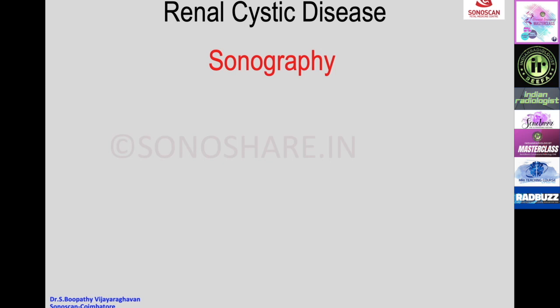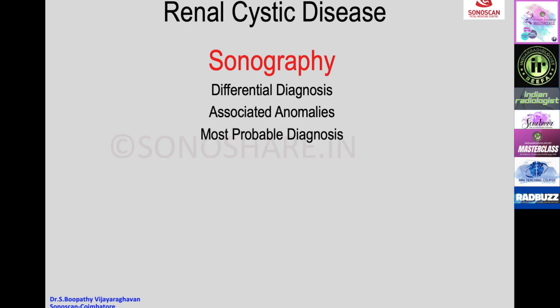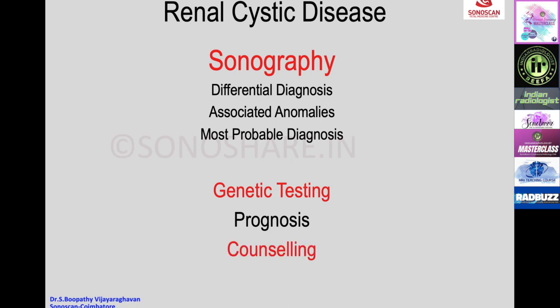The role of sonography in renal cystic disease is in differential diagnosis, looking for associated anomalies, and arriving at the most probable diagnosis. Based on that, genetic testing is done to come to a diagnosis and prognosticate. Depending upon the various findings, the patient and family are counseled, and follow-up is conducted where necessary.